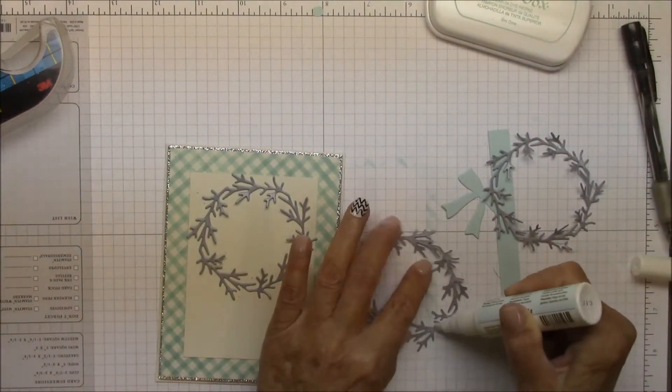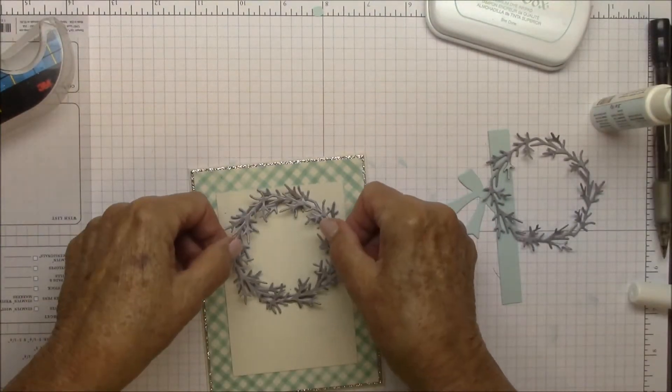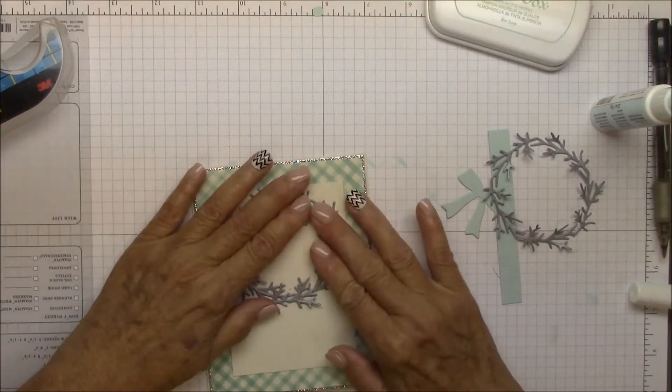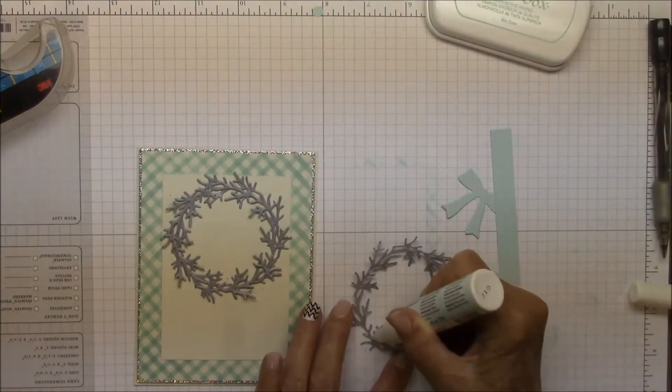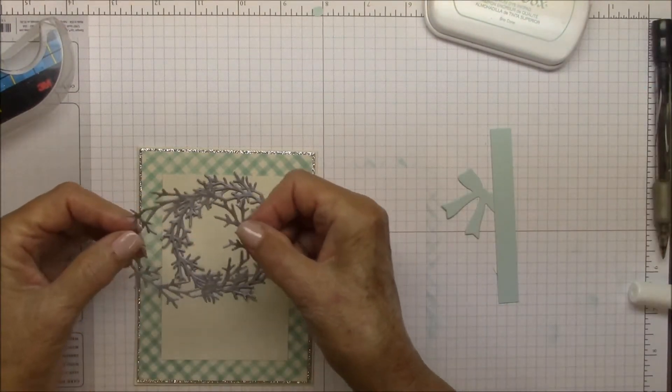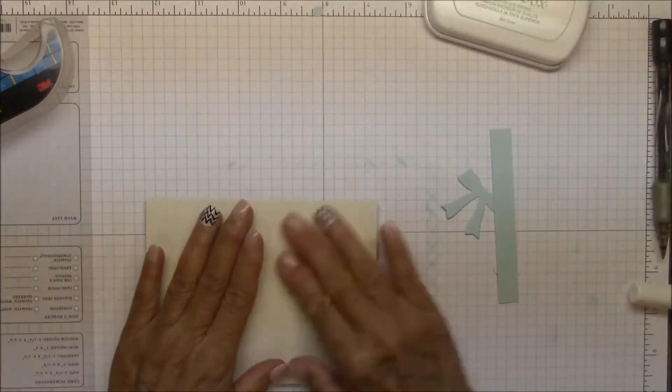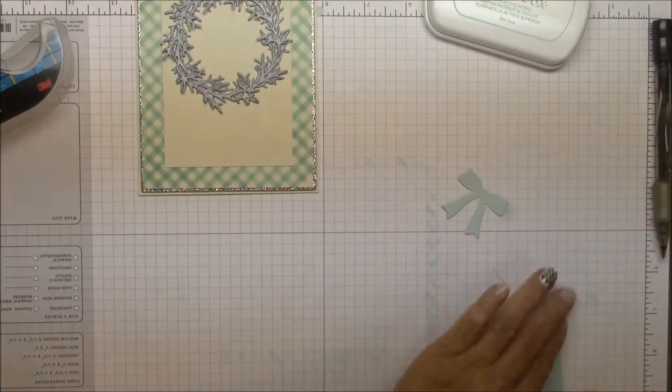And now I'm going to adhere them to the card individually with just a touch of liquid glue in several places. First layer. Second layer will be the same way. I'll just stagger little branches a little bit. It helps to fill it in. And with the third layer, same thing. And to make sure everything is seated properly, I turn it over and just rub real hard on the back.